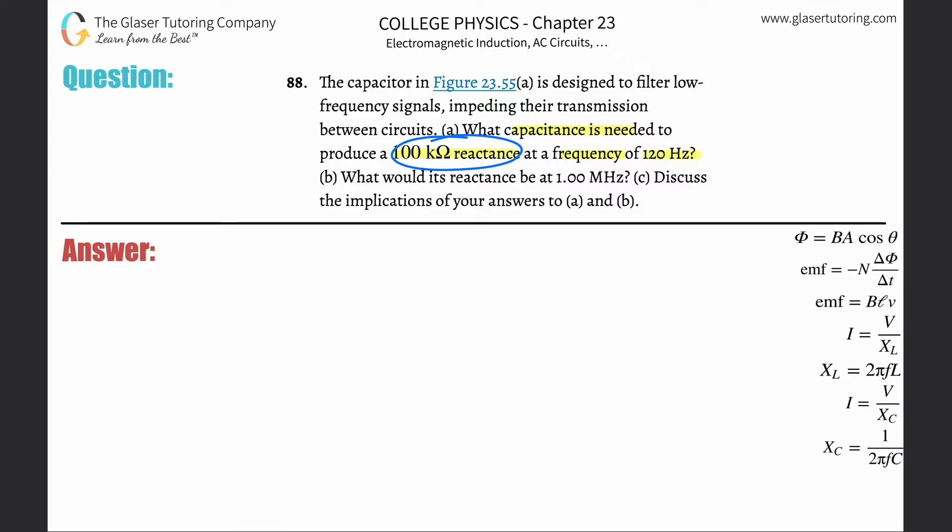Whenever they're talking about reactance and capacitance, what they're really telling you is the capacitive reactance. We have a formula here: the capacitive reactance equals 1 divided by 2π multiplied by the frequency of oscillation multiplied by the actual capacitance.